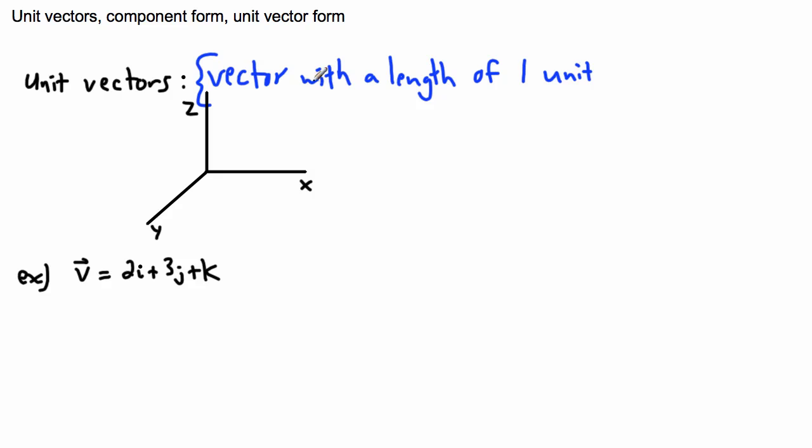When I say a length of one unit, what I mean is exactly this. Because we have three different directions in our Cartesian coordinates here, we have our x, our y, and our z direction. The simplest type of unit vector that has a length of one unit long would be one that goes only in the x direction.